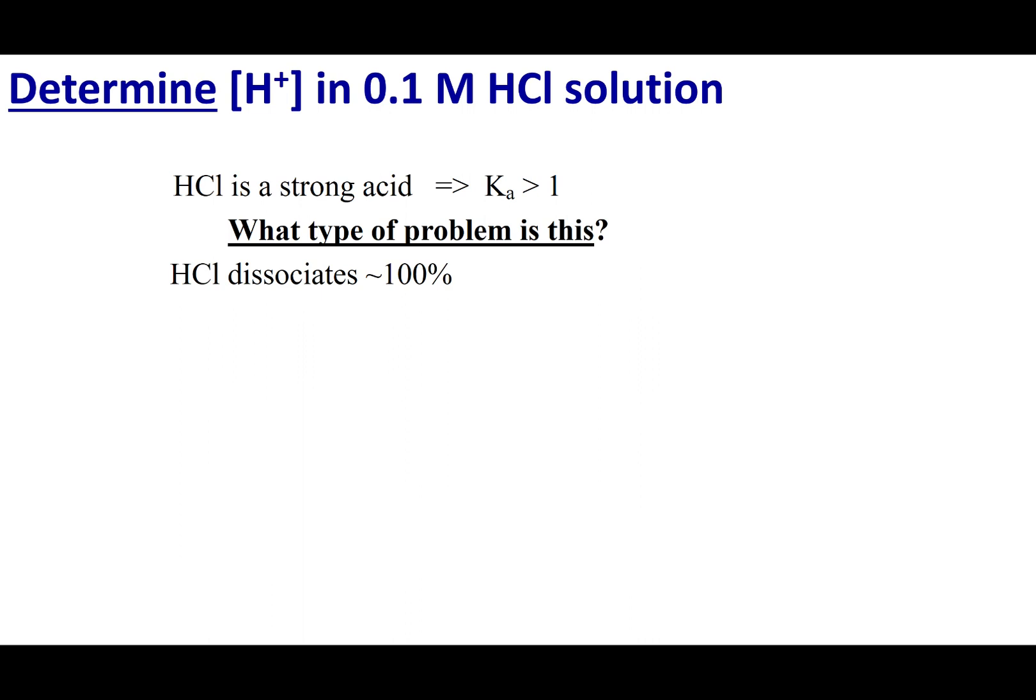The first type of problem is what happens when I dissolve a strong acid into solution and I want to determine its H-plus concentration. So the first thing we have to do is establish what happens when I put HCl in solution. Well, we know it's a strong acid, so I can write HCl, hard arrow, H-plus plus Cl-minus, and everything here is aqueous. I know this dissociates 100%. Now, if it breaks up 100% and I use this hard arrow, what that tells me is I have a stoichiometry problem.